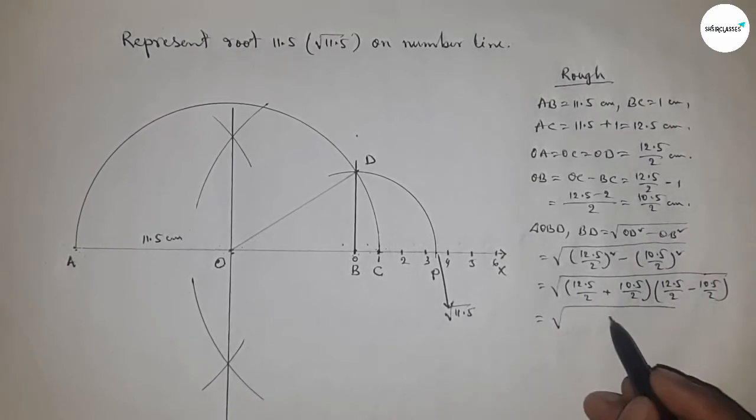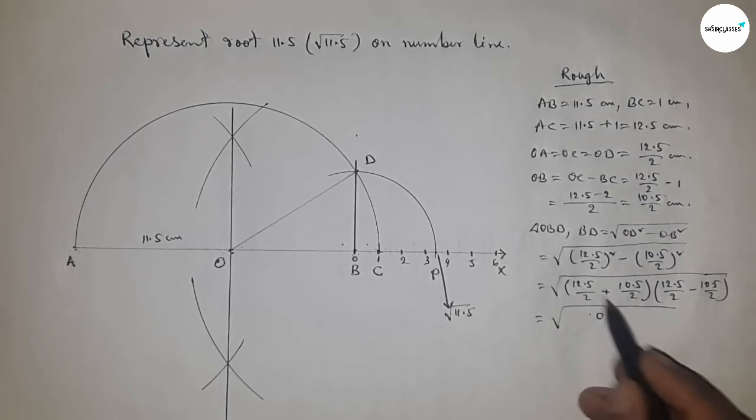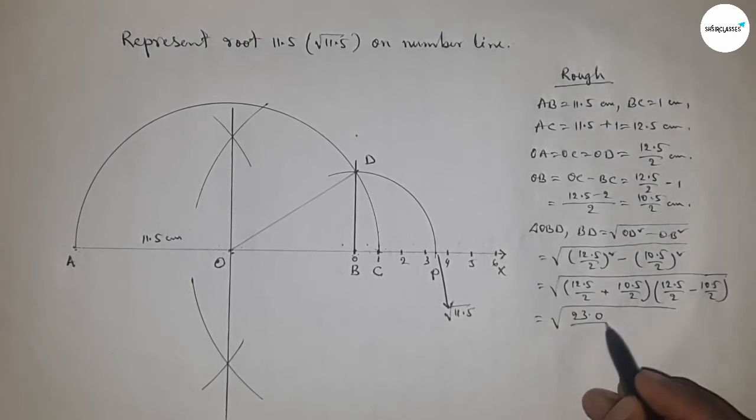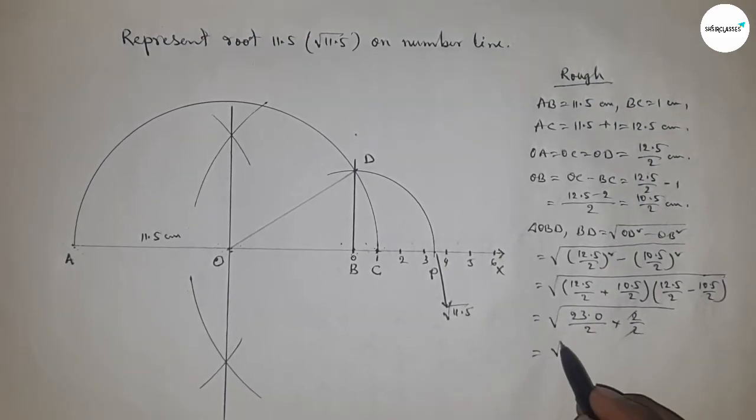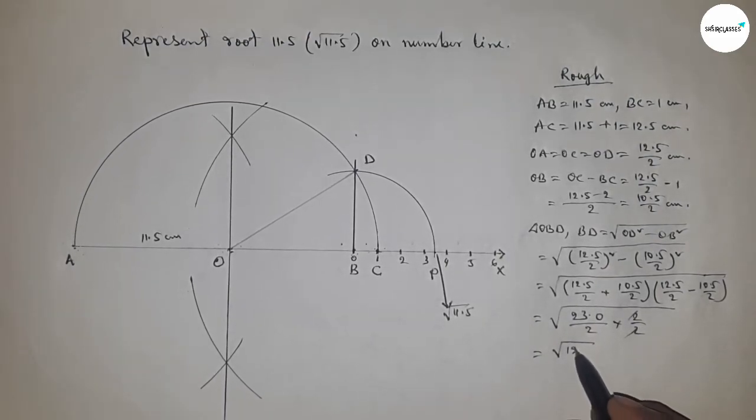From these calculations, this becomes 23.0 divided by 2 times 2 divided by 2, which equals 11.5 centimeters.